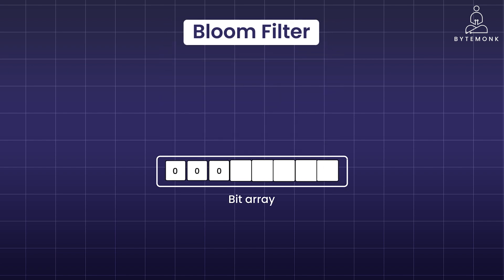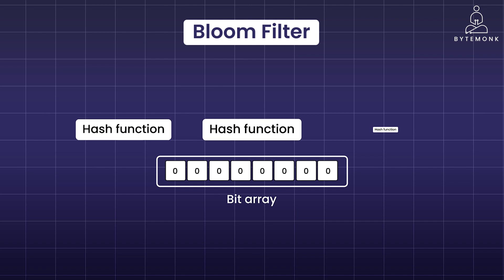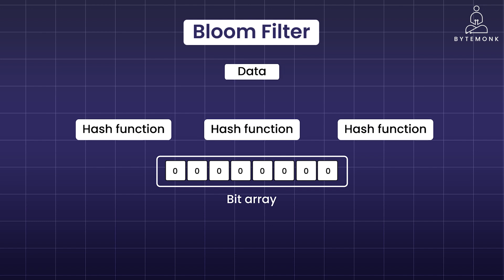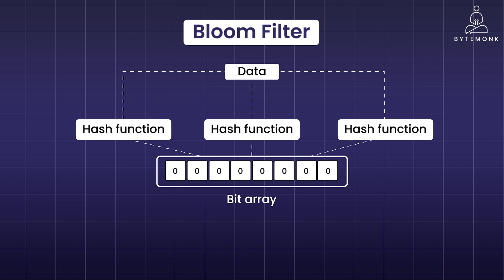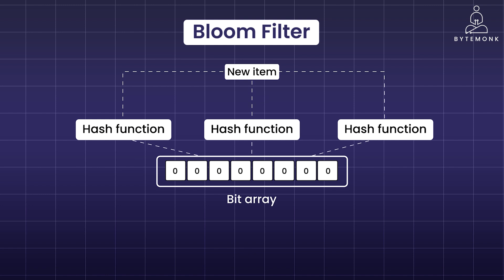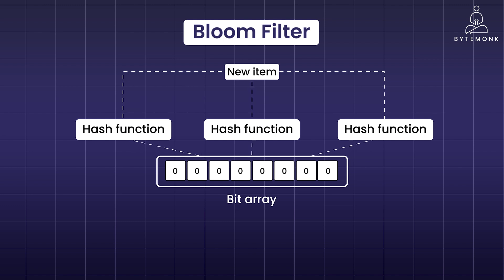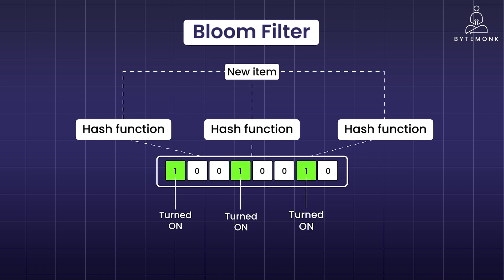Let's break down Bloom filters into bite-sized pieces. Imagine a giant bit array, like a row of light switches — initially, all are off, that is zero. We also use multiple hash functions, in this case three, which take any data like a word and scramble it into a unique number that points to a specific switch in the array. When we add a new item to the filter, we feed its name through the hash functions, each function points to a switch in the array, and we turn those switches on — making them one. It's like marking the item's presence in different locations based on its unique code.